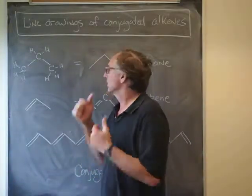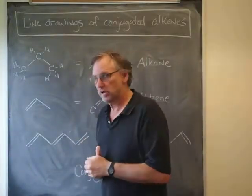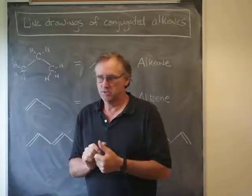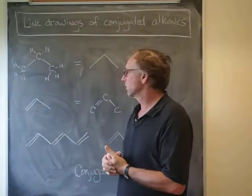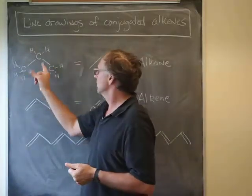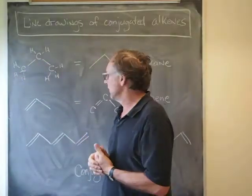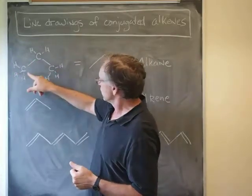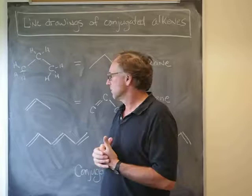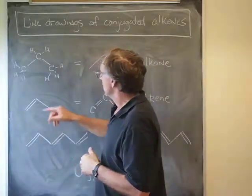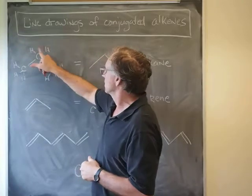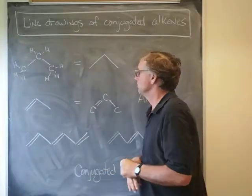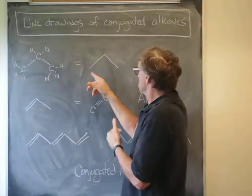Hi, I'm Professor Steven Nasheba and I want to talk to you a little bit about line drawings of conjugated alkenes. Line drawings are a condensed way to represent molecules, especially organic molecules. As an example, here is propane. You can see that it has three carbons and each carbon is bonded to four other atoms, or at least has four bonds. The line drawing of this molecule is written this way.